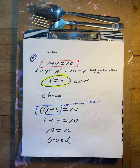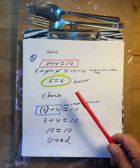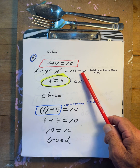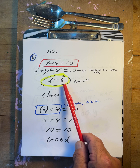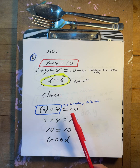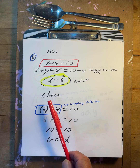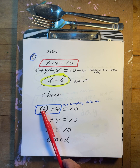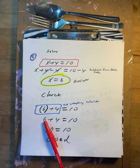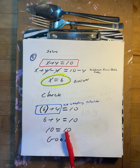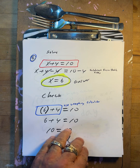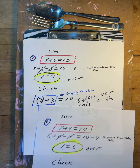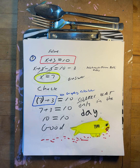x plus four equals ten. Minus four, minus four. So x equals six. Does that work? Put six in: six plus four — six plus four is ten. Ten matches ten. Yes, it works.